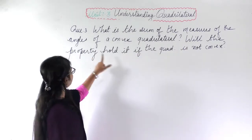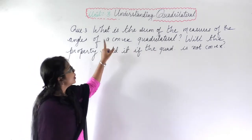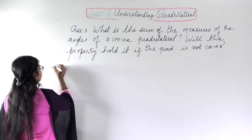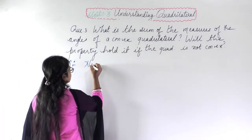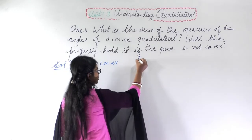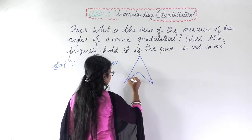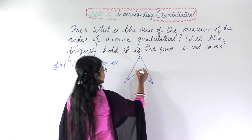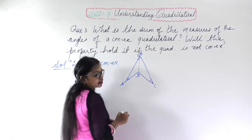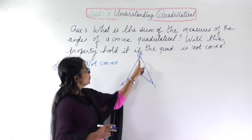The next part of the question asks: will this property hold if the quadrilateral is not convex? For a convex quadrilateral we know it is 360 degrees, but we have to prove it for a non-convex quadrilateral. I am drawing a non-convex quadrilateral ABCD and drawing a diagonal BD.